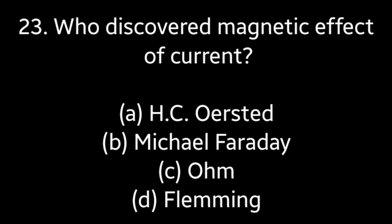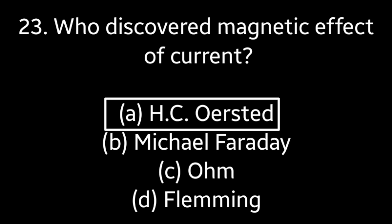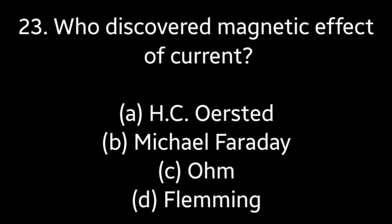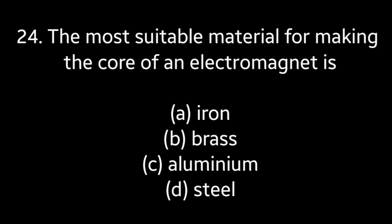Question No. 23: Who discovered the magnetic effect of current? — H.C. Orsted, Michael Faraday, Ohm, Fleming. Answer is Option A: H.C. Orsted.